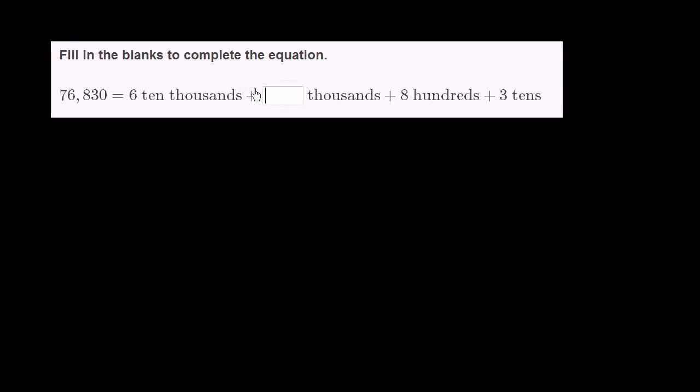Fill in the blanks to complete the equation. So they have 76,830 is equal to 6 ten thousands plus blank thousands plus eight hundreds plus three tens. So let's just think about 76,830.